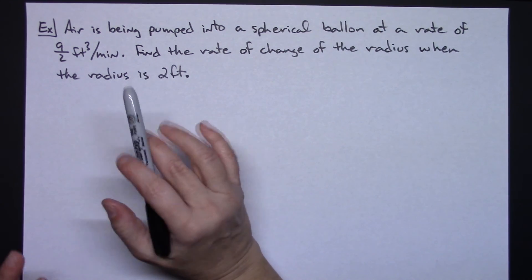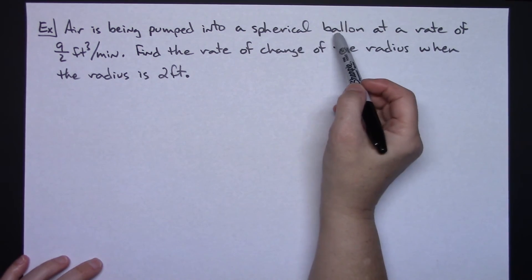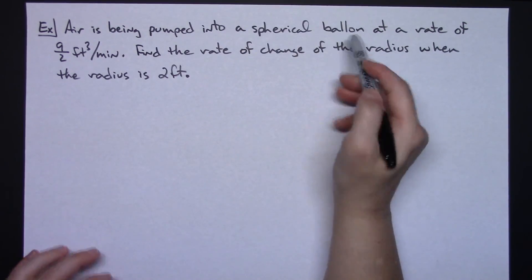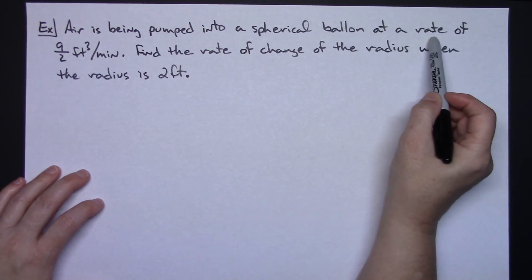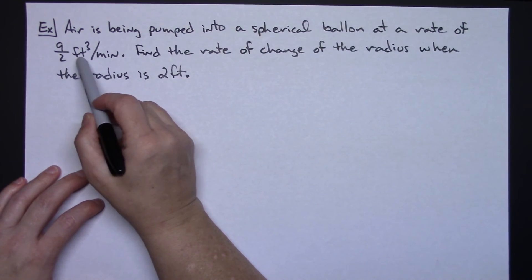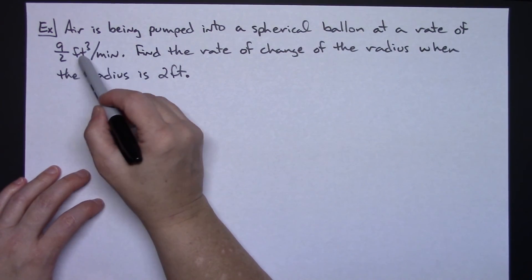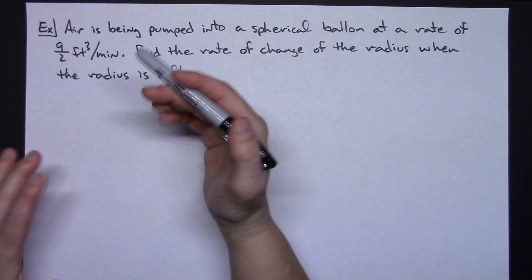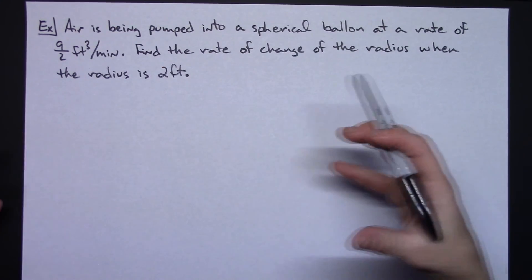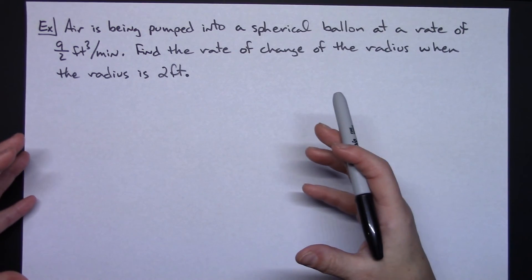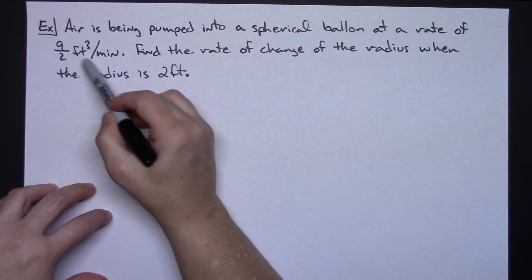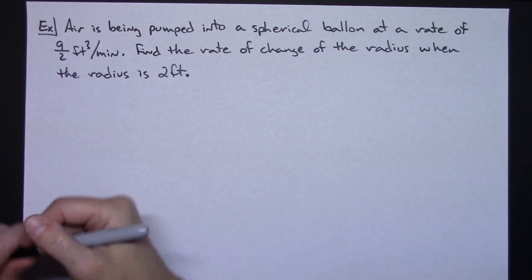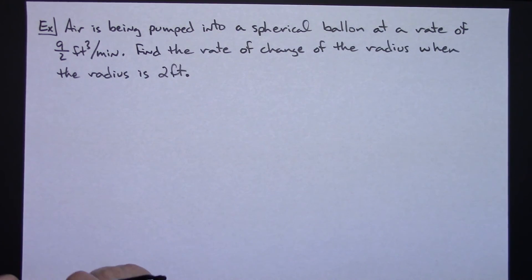So we kind of take a look at what's going on here. We've got a balloon, we've got air being pumped into that balloon so that balloon is getting bigger and bigger, and it tells you it's being pumped in at a rate of 9/2 feet cubed per minute. This label right here should give you a clue. If you can't just logically look at this and go, okay, air is being pumped into the balloon, which what's changing? Well, the volume is what's changing here.